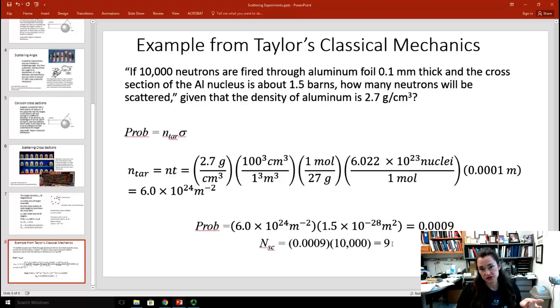So, actually, 9 neutrons are scattered from an aluminum foil target that's .1 millimeters thick in this case. So, that's hard sphere scattering and an example of hard sphere scattering. I hope you understood that. If not, ask me about it in class and I'll see you later.